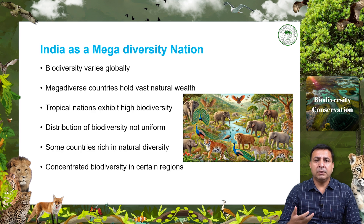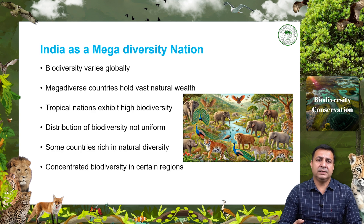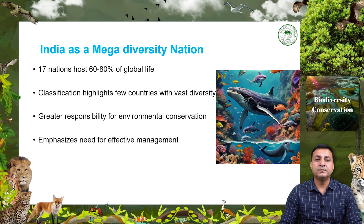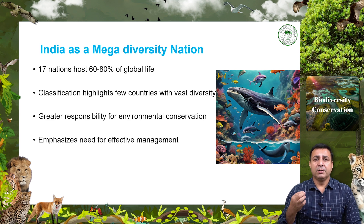Biodiversity is not distributed uniformly across our planet. Mega diverse countries are those which contain a majority of the planet's natural wealth. Some countries, especially in the tropics, host a much bigger concentration of biodiversity. There are about 17 mega diverse countries in the world, and together these 17 nations are home to between 60 and 80 percent of the life on earth. The aim of this classification is to show how a small number of countries possess a great proportion of global biodiversity, which in turn means they have a much greater political responsibility for environmental conservation and management.